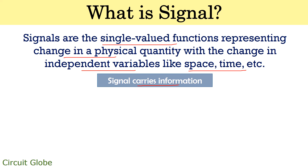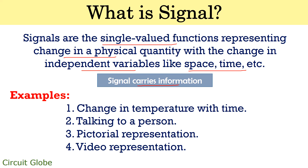Now the question arises: how can we say that? To understand this, consider some real-life examples. The first example is the change in temperature with respect to time. If we consider a day in summer season, then we know that the temperature will be low in the morning, then rises with time and will be comparatively high in the afternoon. This shows that temperature is varying with time, so here the physical quantity is temperature and the independent variable is time. The change in temperature with time carries information regarding the atmospheric condition.